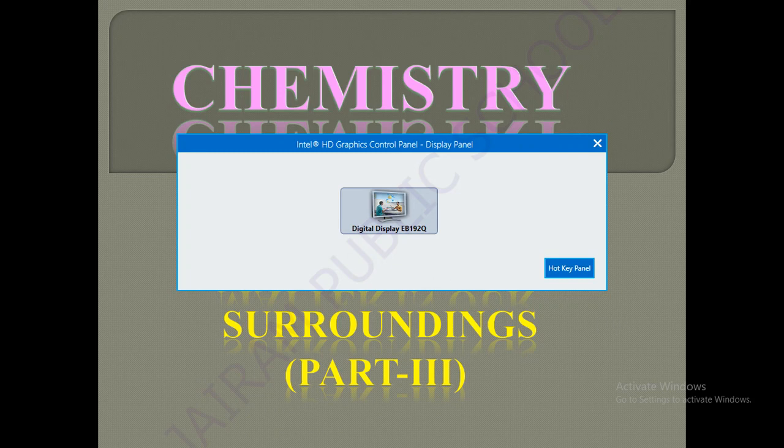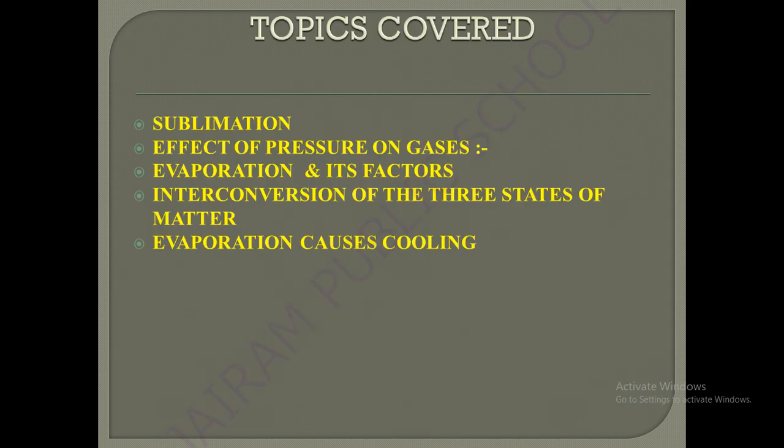This is Class 9 Chemistry Chapter 1, 'Matter in Our Surroundings', Part 3. The topics covered in this part are: sublimation, effects of pressure on gases, evaporation and its factors, interconversion of three states of matter, and how evaporation causes cooling.